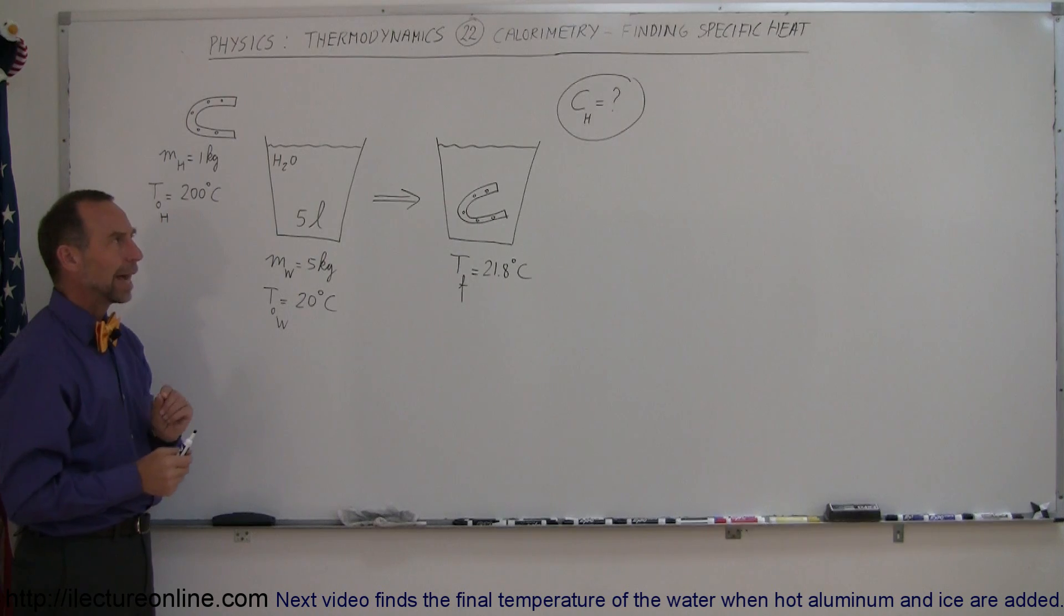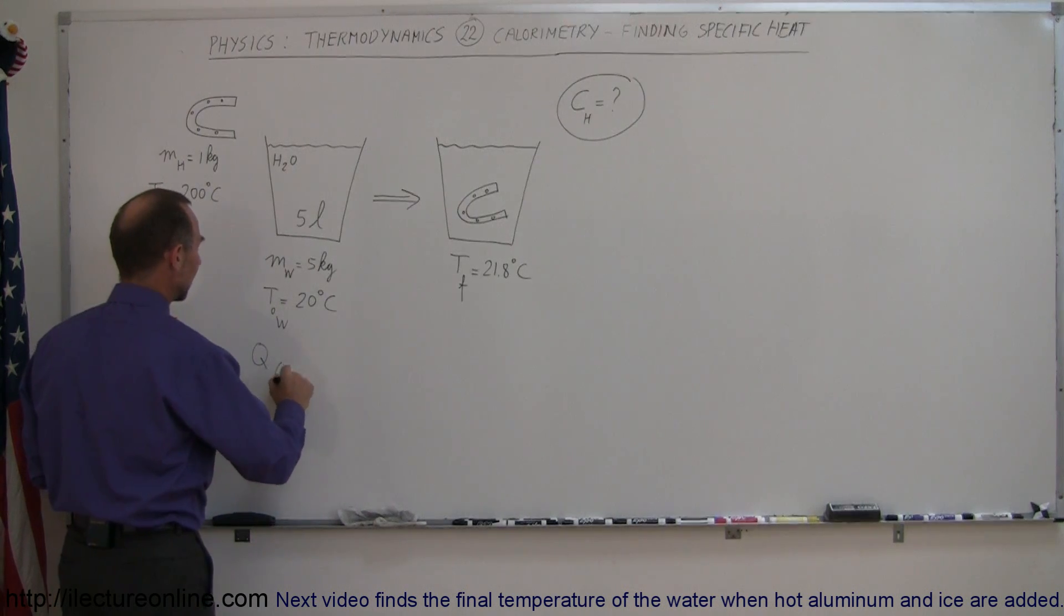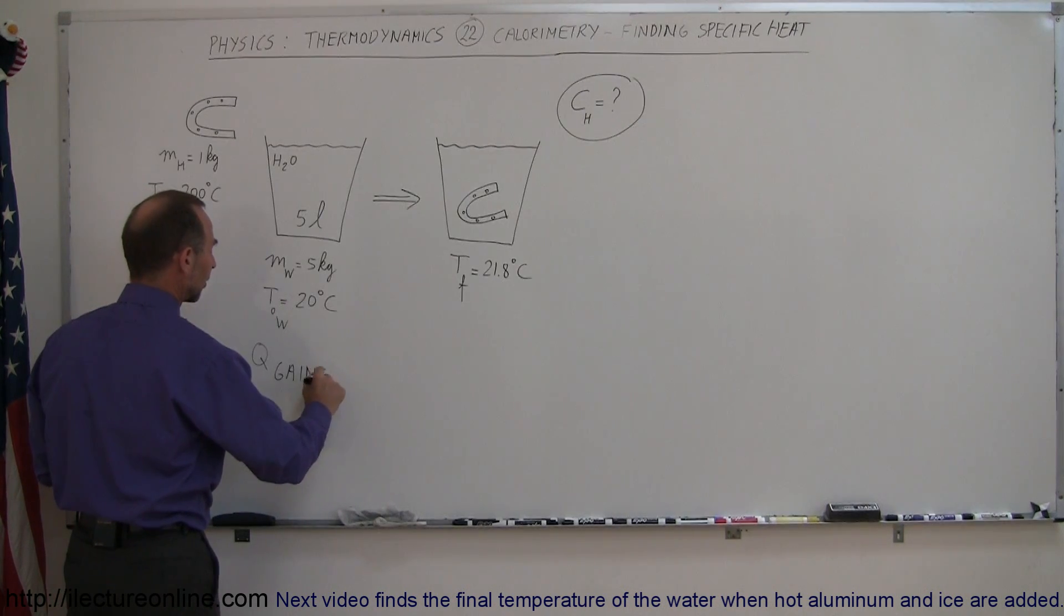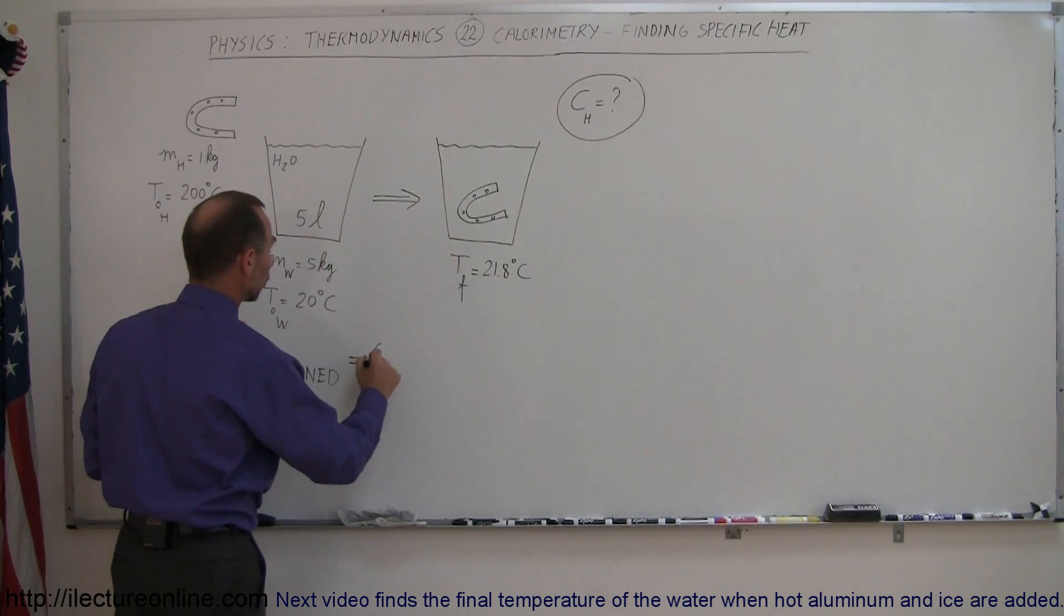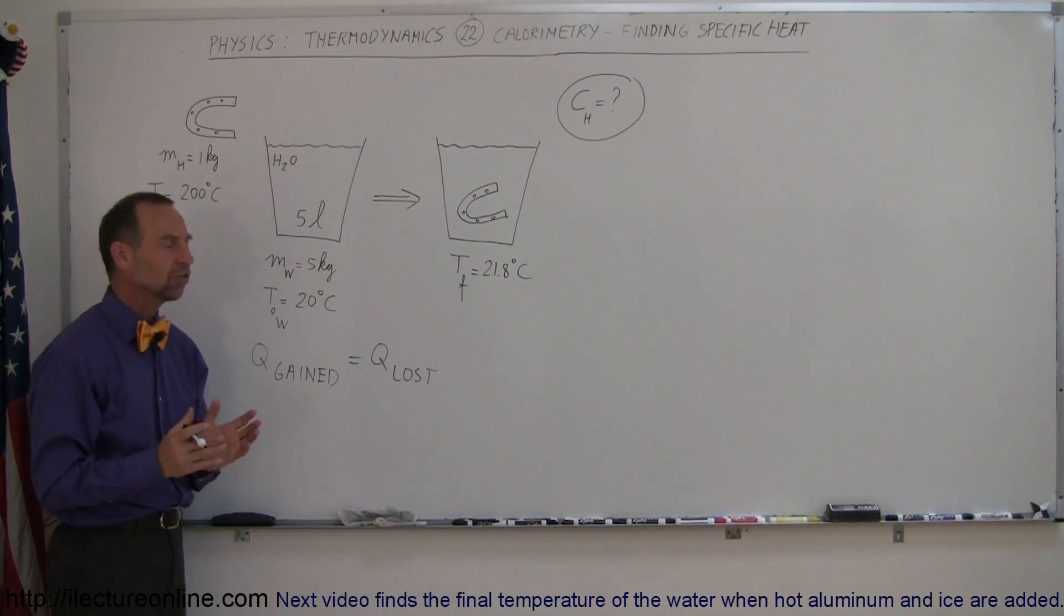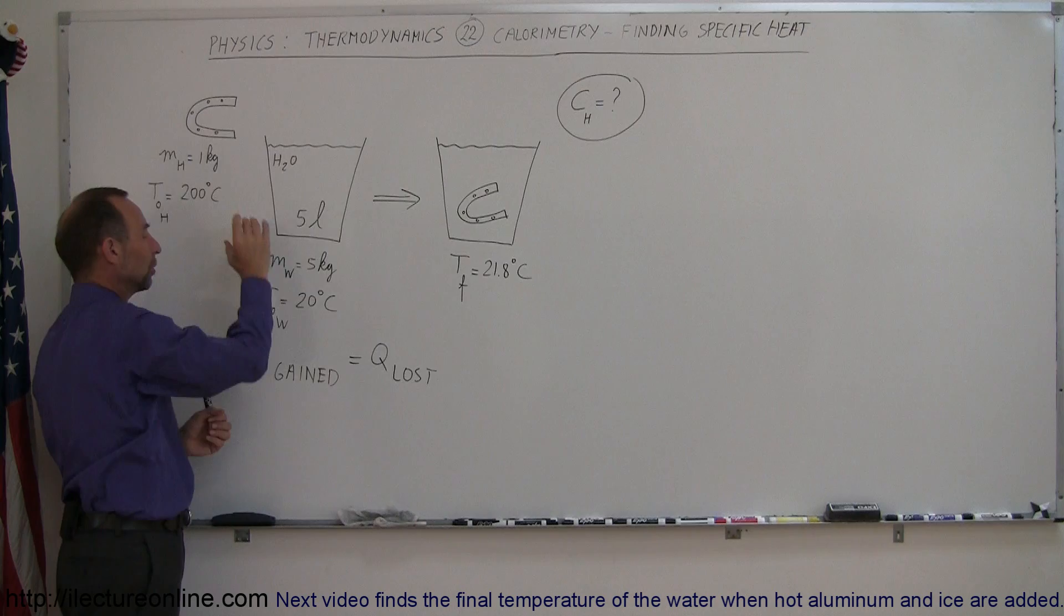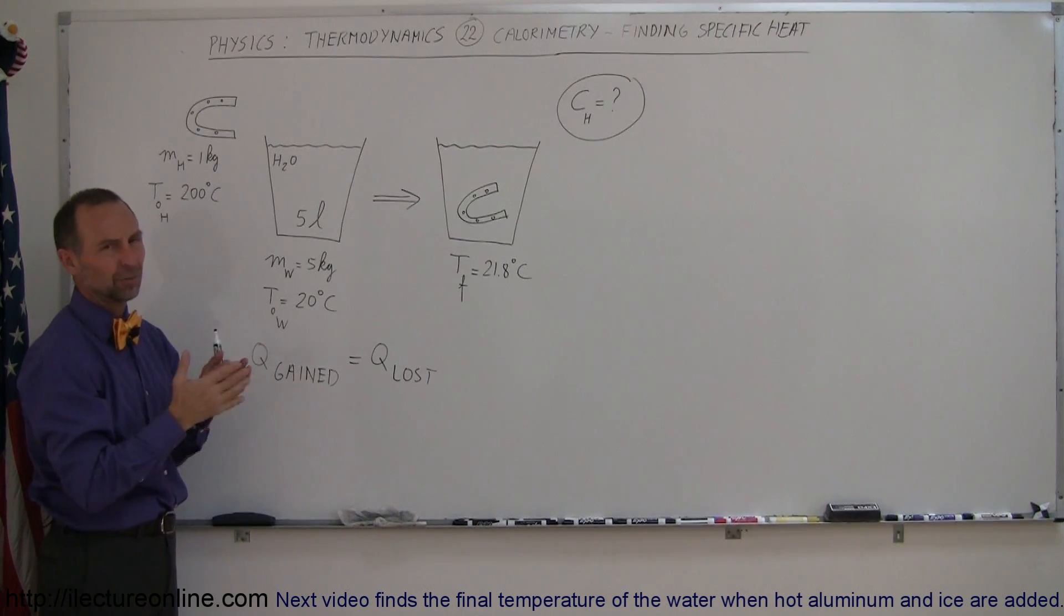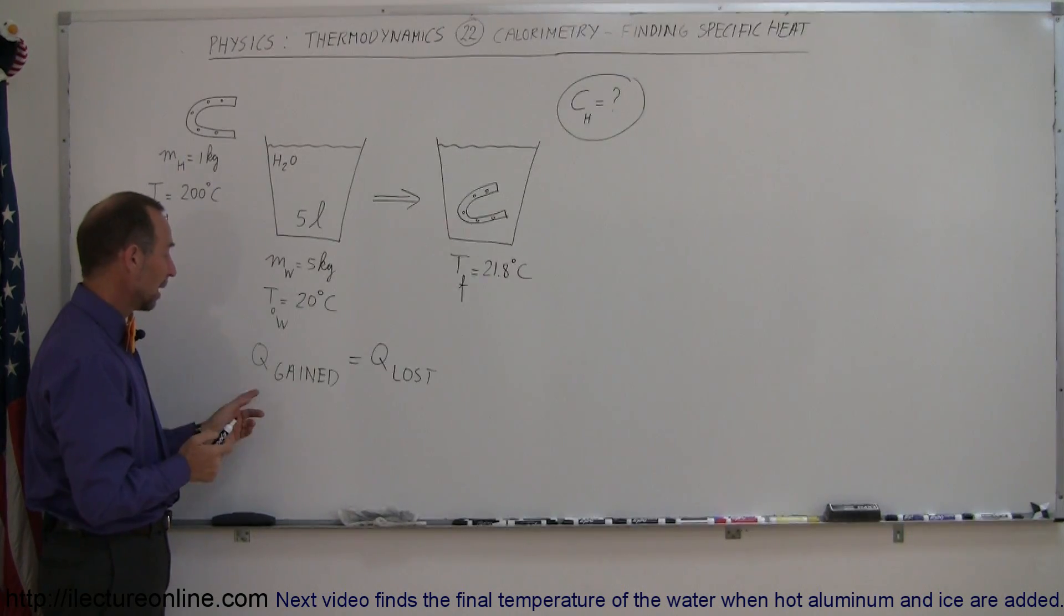The best way to do that, and just about any calorimeter problem, is the following. Let's start out with the equation that the Q gained by all the things within the problem that are gaining heat must equal the Q lost by all the things within the problem that are losing heat. So in this case, it's very straightforward. The water is gaining heat. The horseshoe is losing heat. And let's ignore the bucket. The bucket is made out of wood, and it's not going to change too much in temperature.